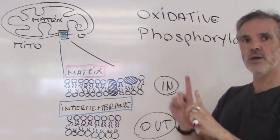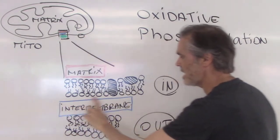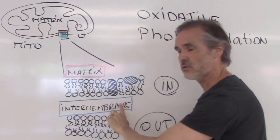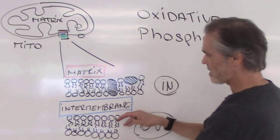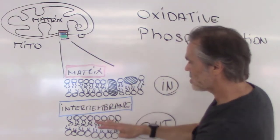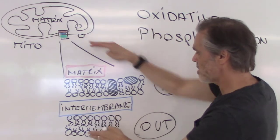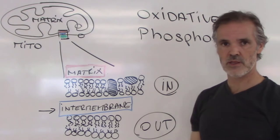In between those two membranes, we have a space, and that's called the intermembrane space. That side here is on the matrix side, and this one here is on the outside. That's the outer membrane right here, and then in between we have the intermembrane space.